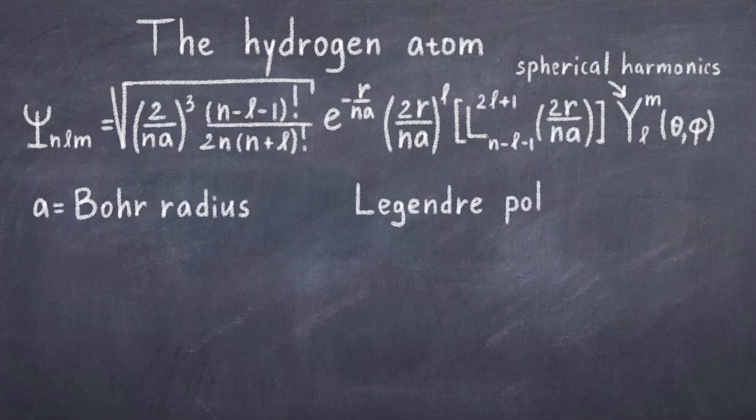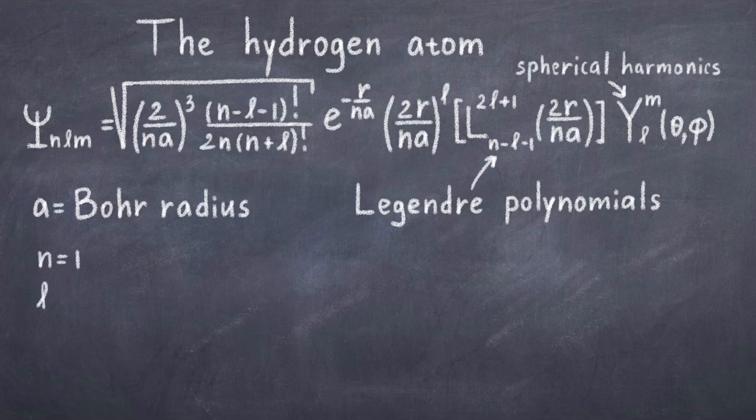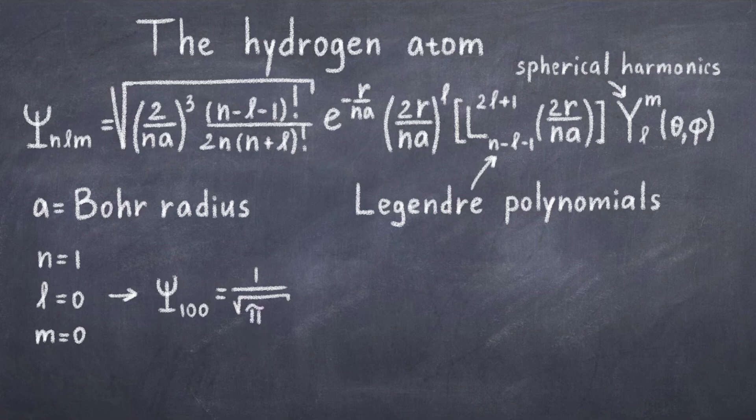As an example, if we choose the simple case of n equal to 1 again, then we also know that l and m is 0. This gives us that the psi of 1, 0, 0 is equal to 1 over the square root of pi a cubed times e to the power of minus r over a. And this is arguably the simplest solution.